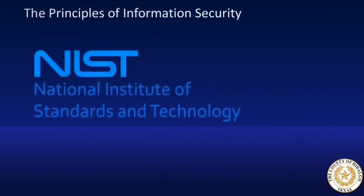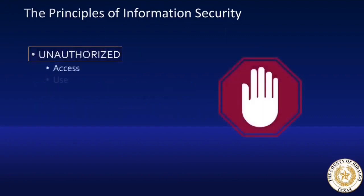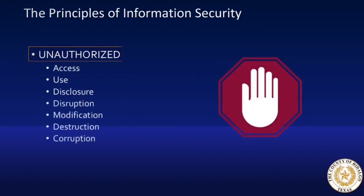The framework for our definitions and technology are modeled after the federal department known as NIST, the National Institute of Standards and Technology. According to NIST, information security is the practice of protecting information by mitigating or reducing the risks associated with the information by preventing or at least reducing the probability of unauthorized access, use, disclosure, disruption, modification, destruction, or corruption. The keyword here is unauthorized. All these activities happen on a daily basis, but they must be authorized.